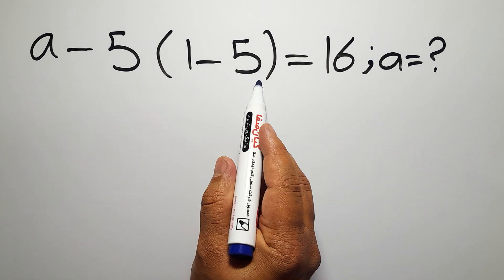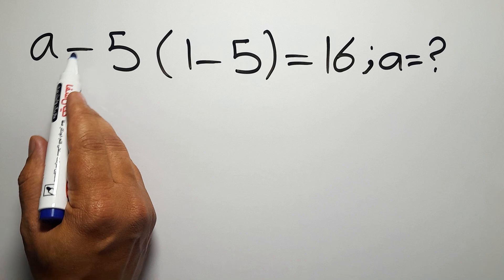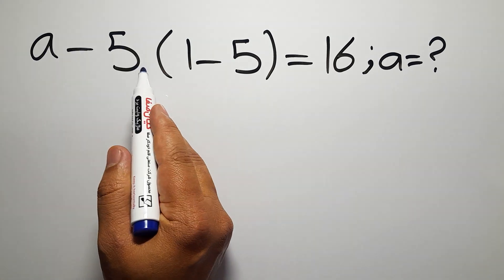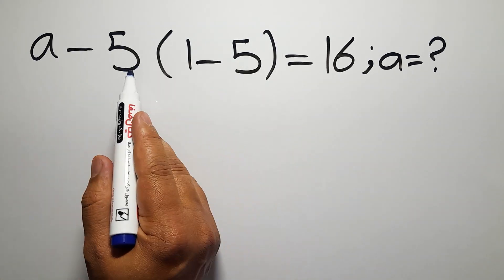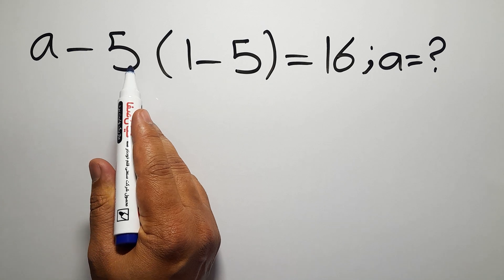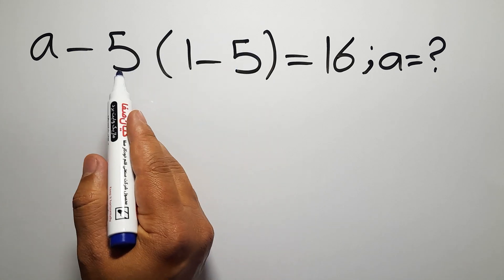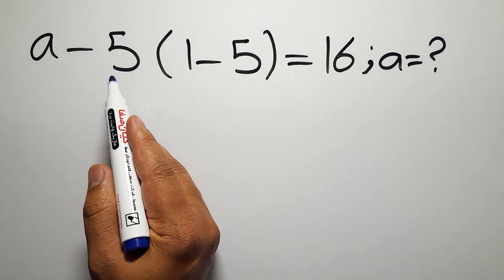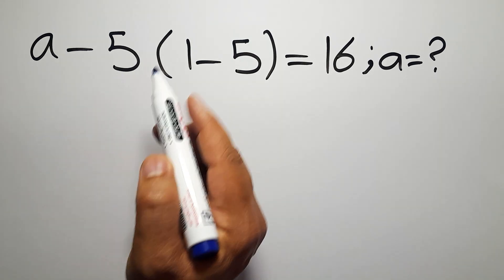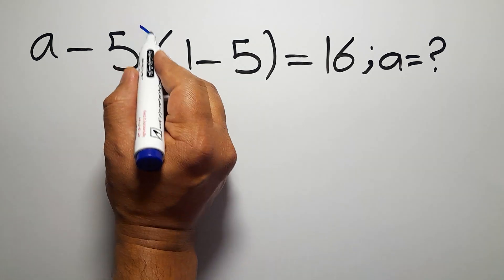In this expression, on the left-hand side, we have this subtraction, this multiplication, and these parentheses. In mathematics, when a number is placed next to parentheses, it means multiplication, and we usually don't write the multiplication sign for brevity. So here we have a multiplication.